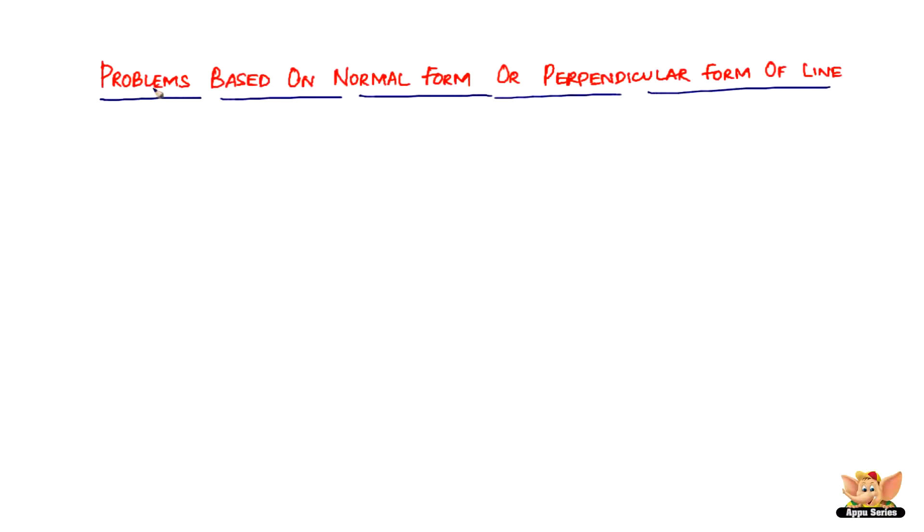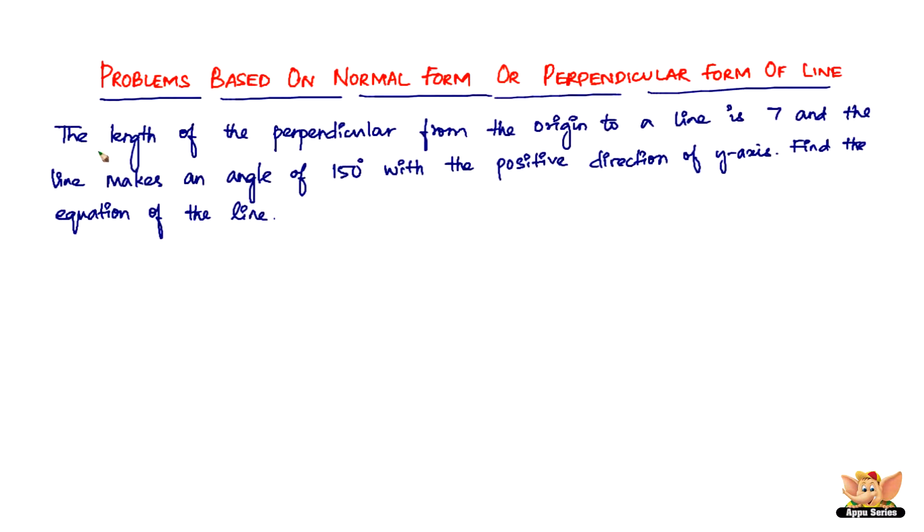In this video, let us continue to solve more problems based on the normal form or perpendicular form of a line. Here we've got the question which reads: The length of the perpendicular from the origin to a line is seven, and the line makes an angle of 150 degrees with the positive direction of the y-axis. Find the equation of the line. Now, the most important change in this problem is that the line makes an angle of 150 degrees with the positive direction of the y-axis.